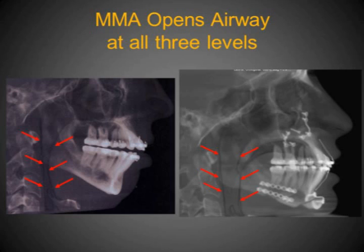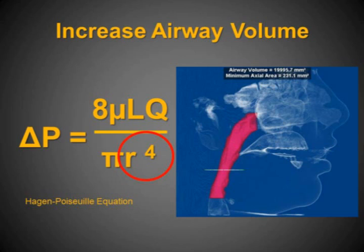Maxillary Mandibular Advancement opens the airway at all three levels: at the base of the nose, at the soft palate, and also at the base of the tongue. By advancing the airway, the volume is increased according to Poiseuille's law, which shows that the radius to the fourth power is inversely proportional to the air pressure change or volume flow.